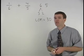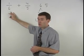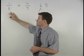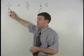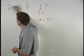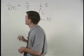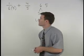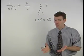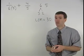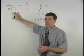In order to get a denominator of 30 in the first fraction, we must multiply our denominator of six by five. The problem is we can't just multiply the denominator of a fraction by five, because that changes its value.